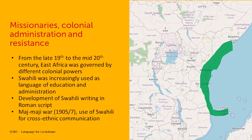Swahili was increasingly used as a language of education and administration. We also see the development of Swahili writing in Roman script by Christian missionaries who would use Swahili for Bible translations. However, Swahili was also used in resistance to colonial power, most notably in the Maji Maji — the Swahili word for water — of 1905 to 1907, where in particular southern Tanzania a number of ethnic groups united to resist German colonial administration. In that movement, Swahili was used for cross-ethnic communication, which was later used as independent language policy to show the pedigree of Swahili as an anti-colonial and cross-community language.